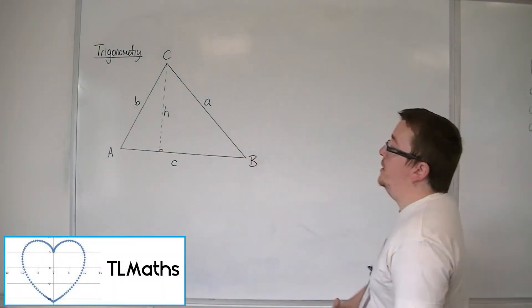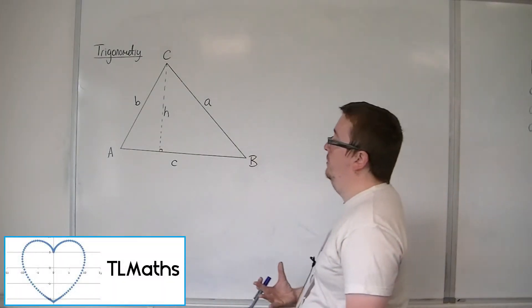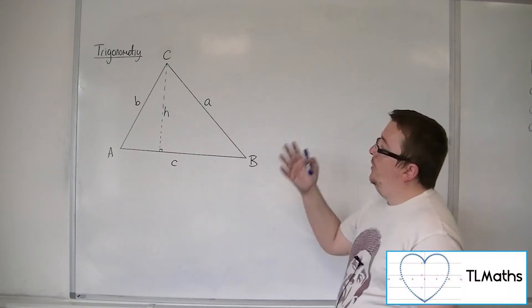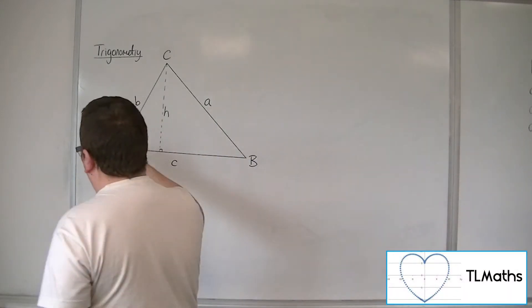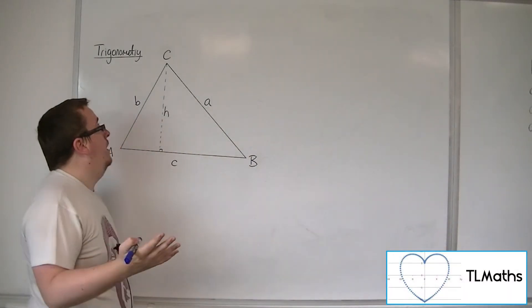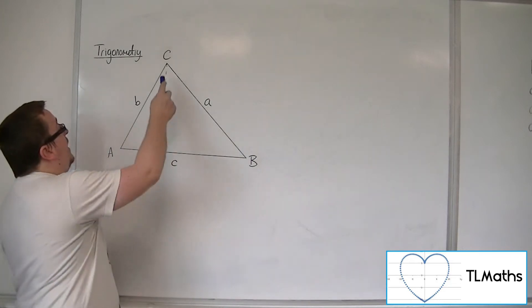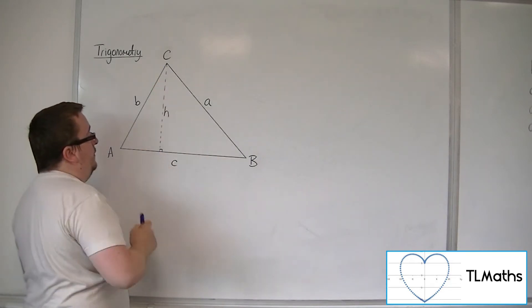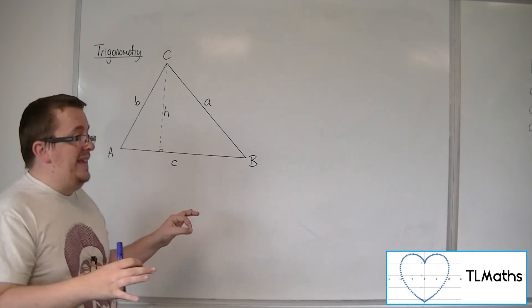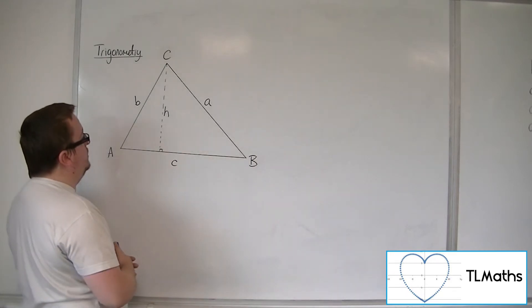Using the same diagram that we use for the sine rule, we've got this scalene triangle where I've dropped a perpendicular down from the angle C down to the line AB to make a right angle.